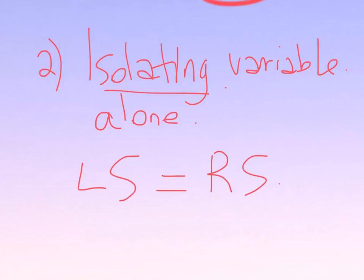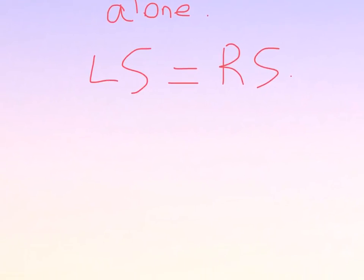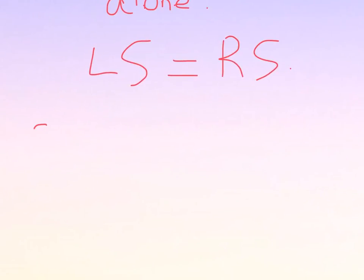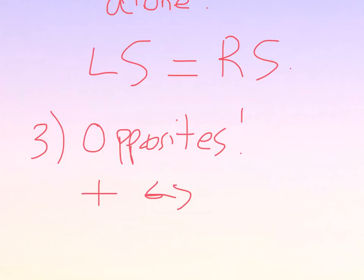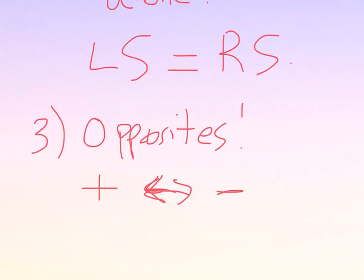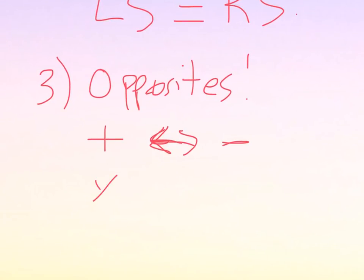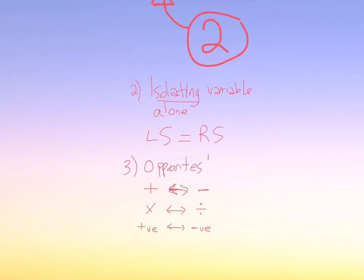Now, to actually isolate a variable, the trick is to do the opposite of what's happening around it. For example, the opposite of adding is subtracting. The opposite of multiplying is dividing. And the opposite of positive is negative. So, with all of that in mind, let's go ahead and try some example questions here.